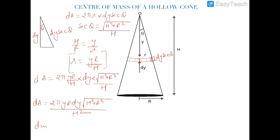Now dm = dA times mass per unit area. This is a hollow cone with no base — it is hollow from the bottom also, so there is only the slant surface of the cone. The mass is uniformly distributed on the slant area of the cone, and the slant area of the cone is πRL where L is the slant height √(h² + R²).